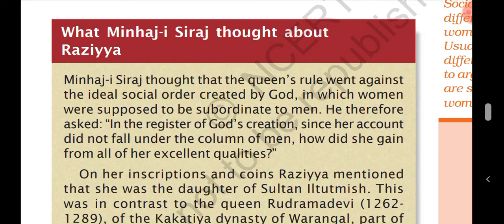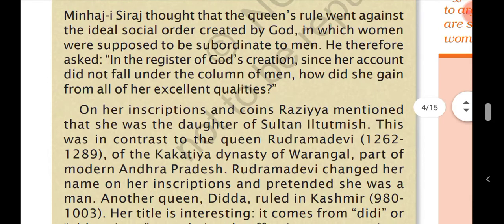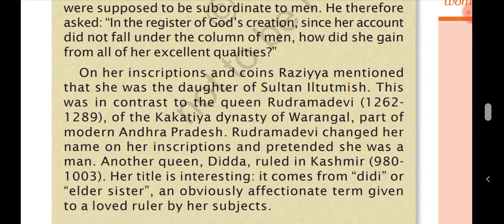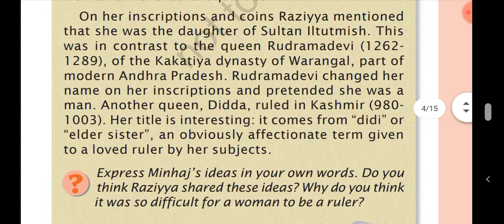Razia Sultan was the first woman ruler who ruled over Delhi. However, Minhaj-i-Siraj thought that a queen's rule went against the ideal social order created by God, because at that time people believed only men could rule and women were supposed to be subordinate to men. In contrast, in the Kakatiya dynasty of Warangal in modern Andhra Pradesh, Queen Rudramadevi (1262–1289) changed her name on her inscriptions and pretended she was a man.